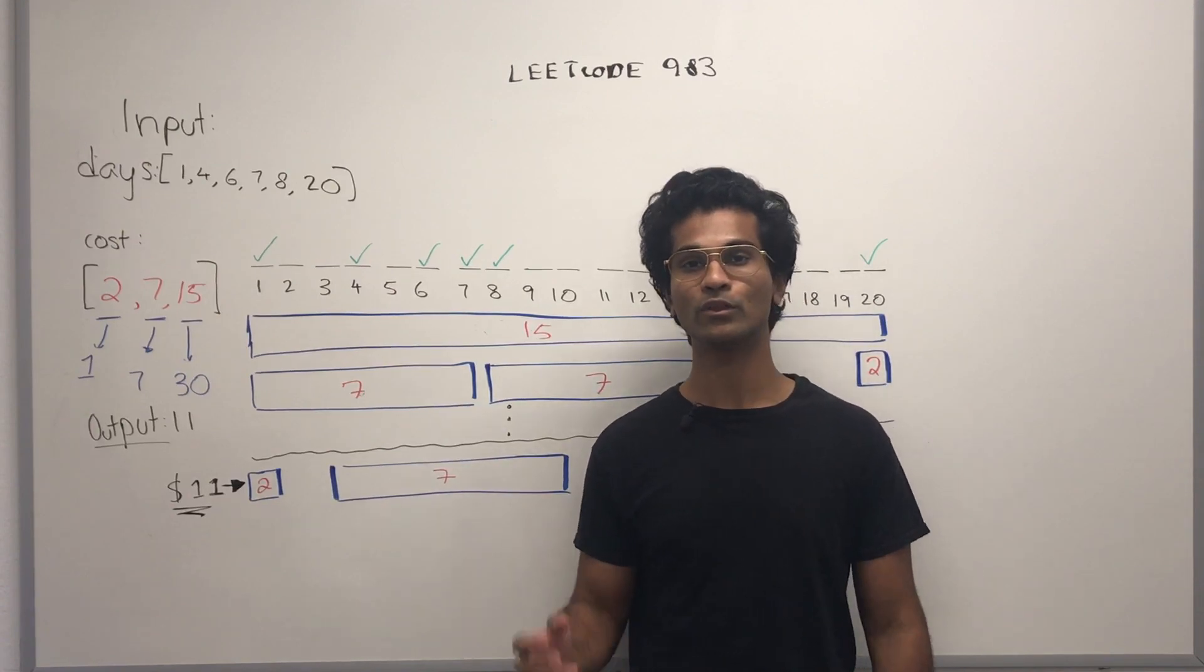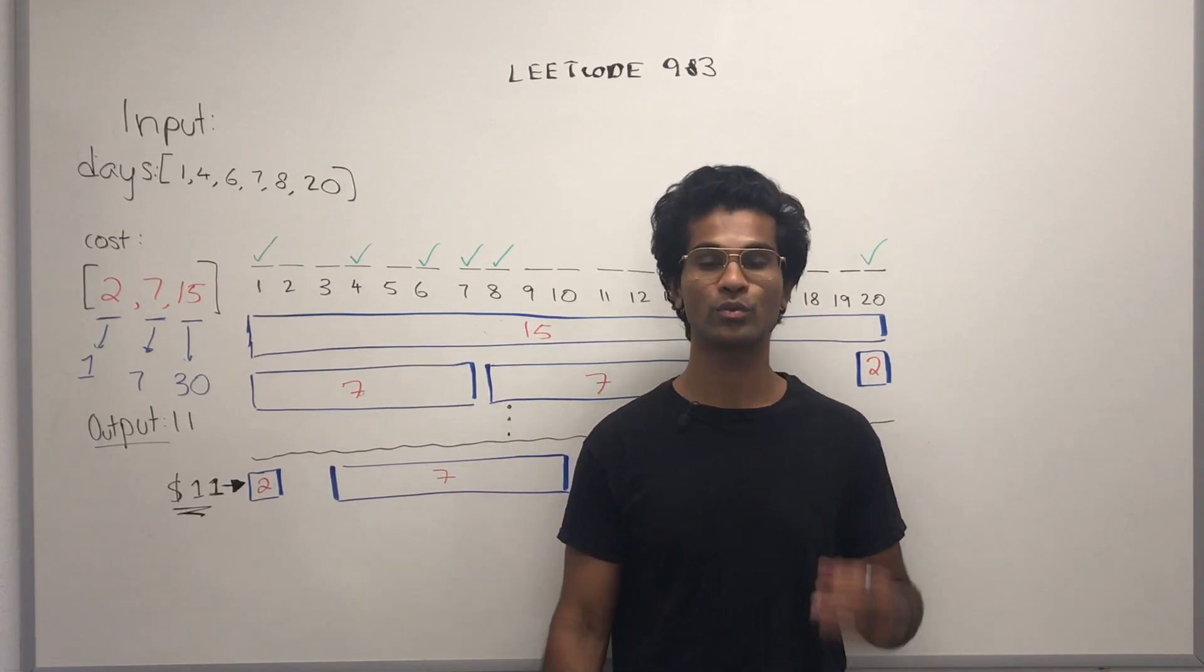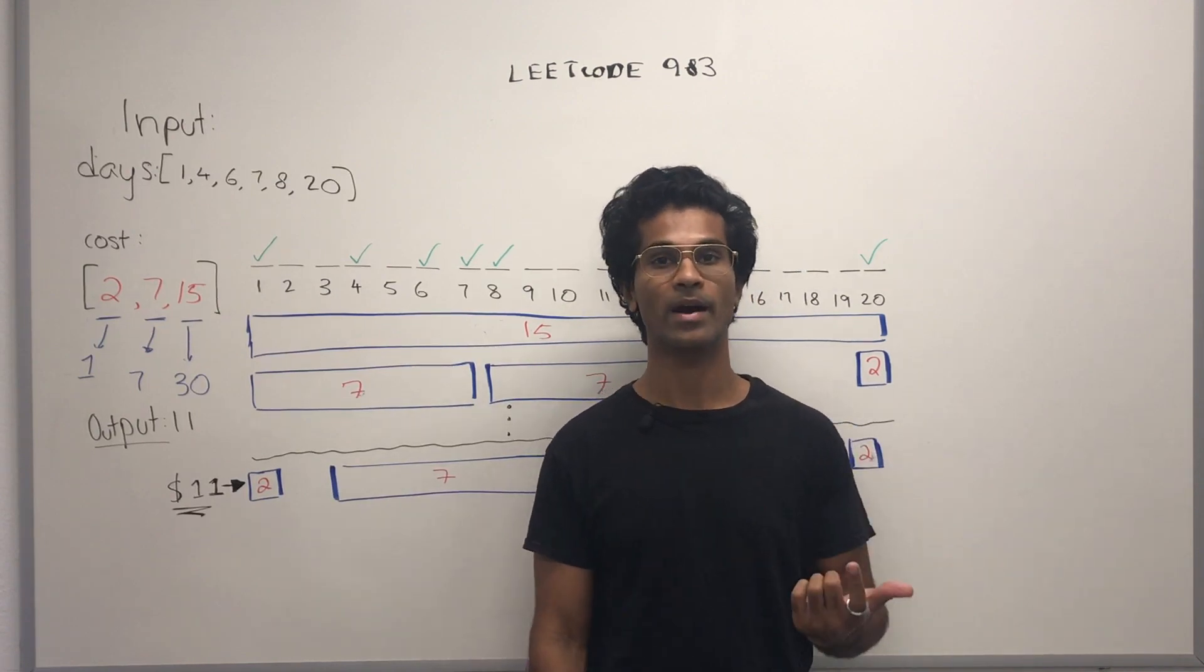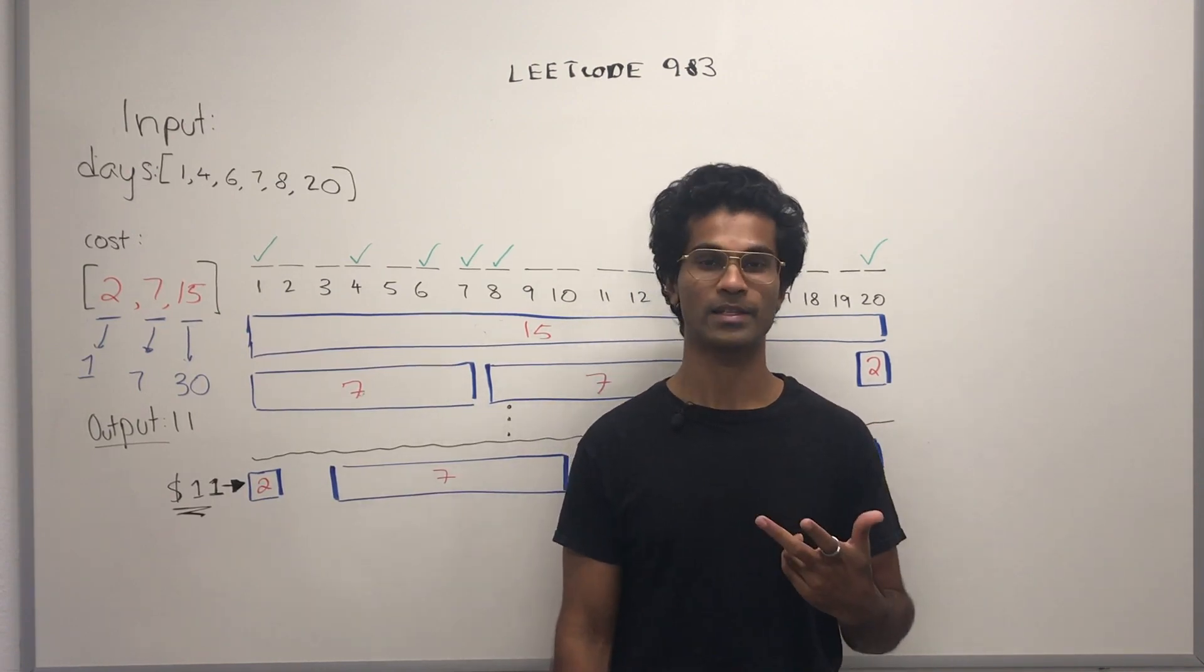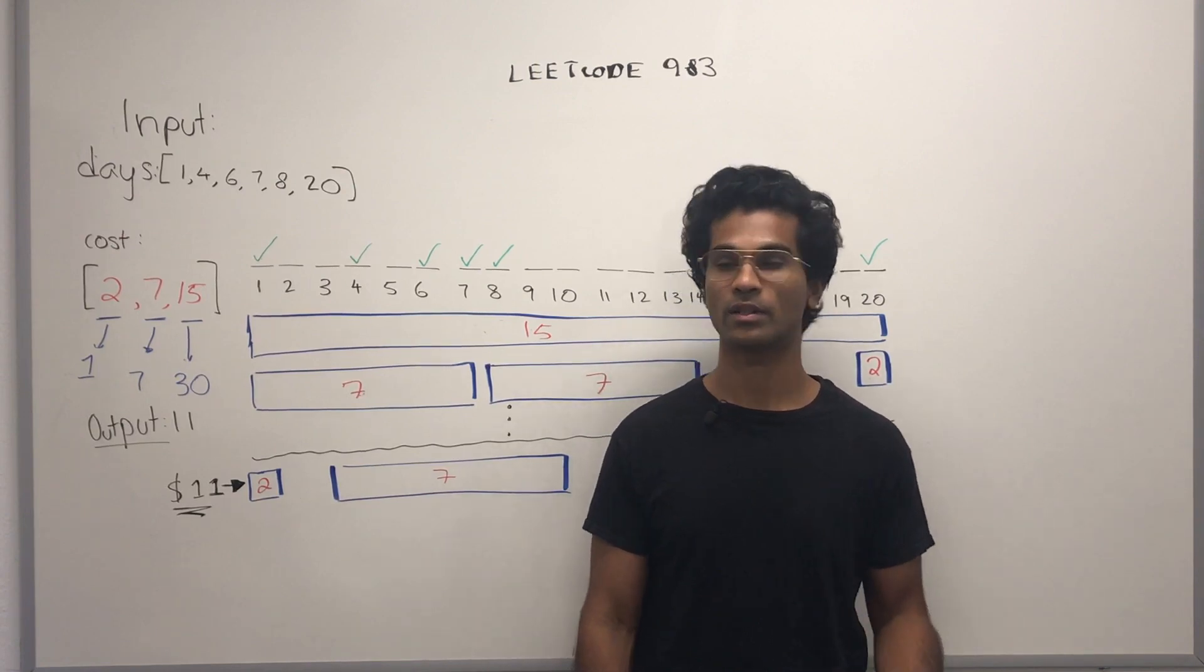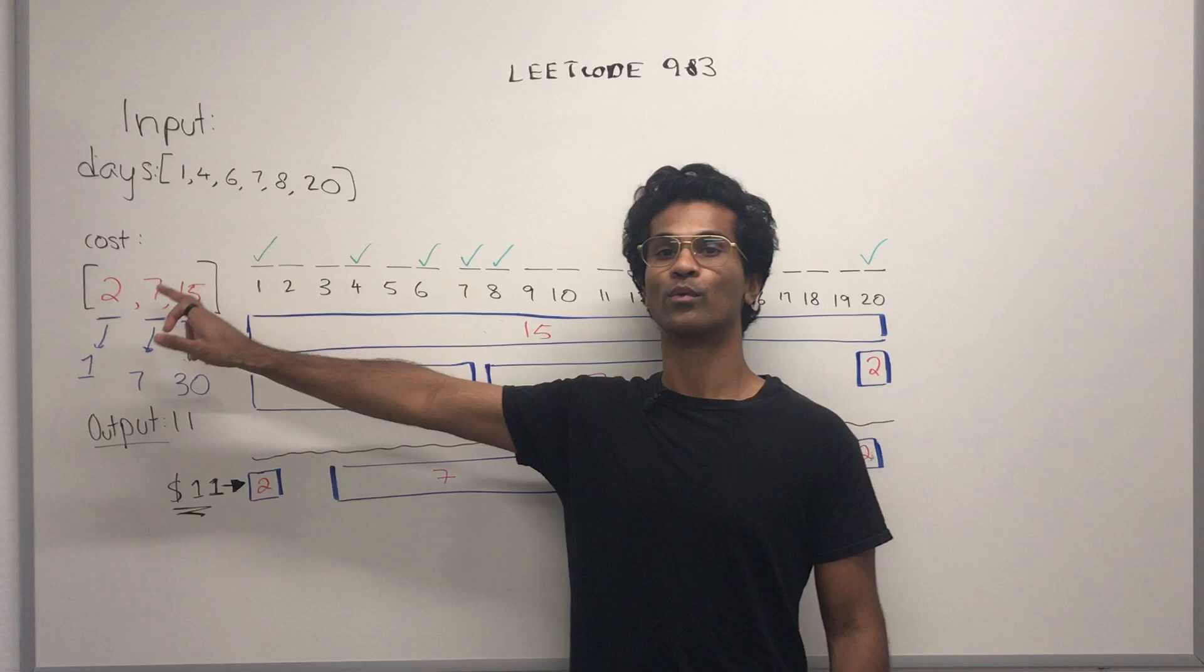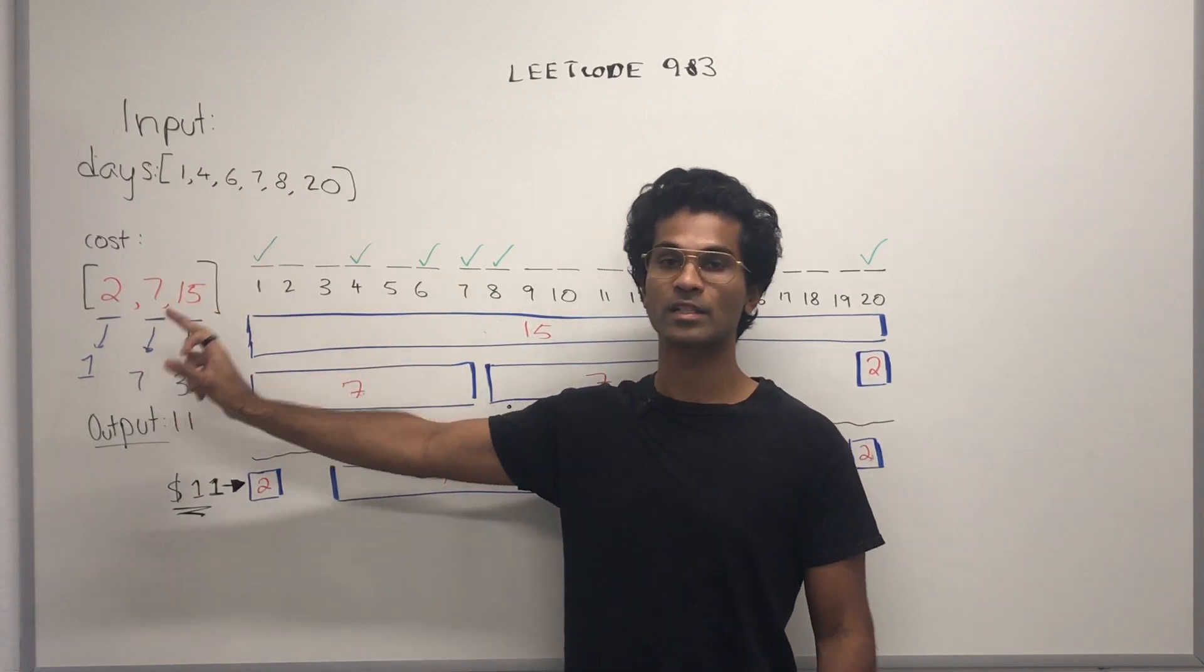We travel using passes, and there's three kinds of passes. There's a one-day pass, a seven-day pass, and a 30-day pass, each with their own cost. The blue represents the type of pass, and the red represents the cost of that specific pass.